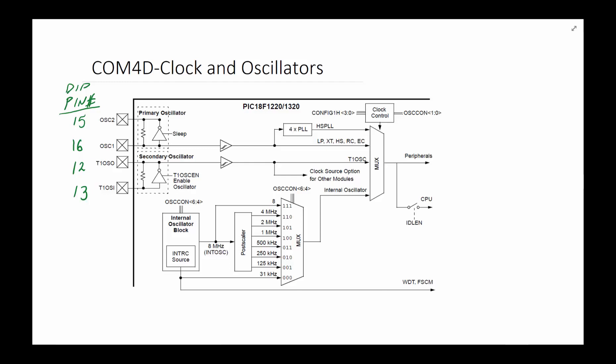For our work, we're going to use the internal oscillator block, so we won't use any of those external clock pins. We're going to run it at the slowest mode, which is the default — 31 kilohertz. The internal oscillator can go all the way up to 8 MHz, and the OSCCON SFR register bits 4 through 6 allow you to set the frequency. As a default it's set to the lowest mode and we're always going to use it at that setting.